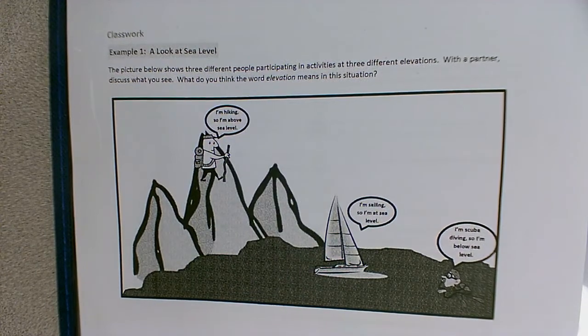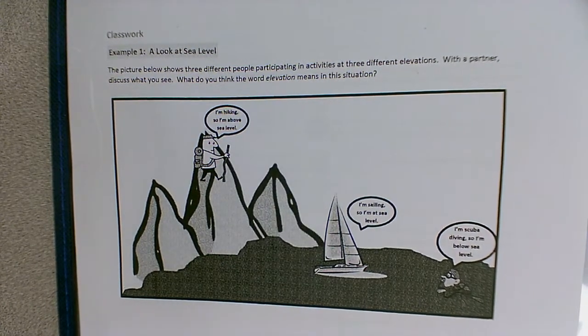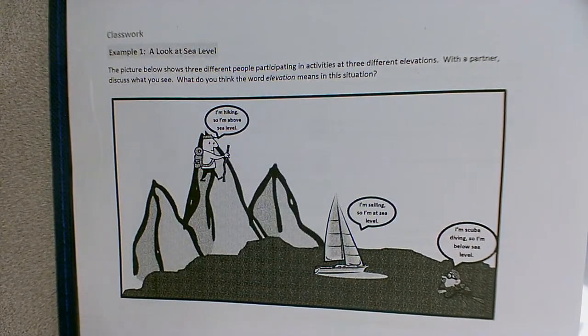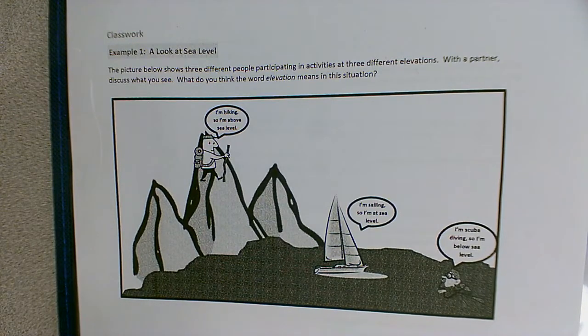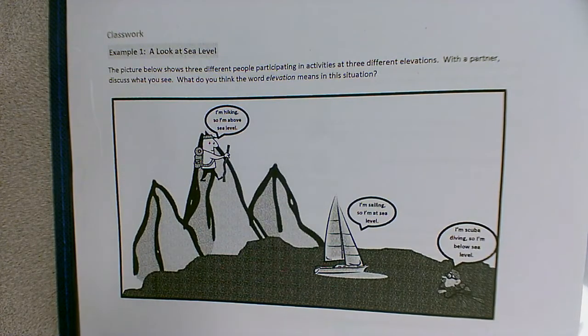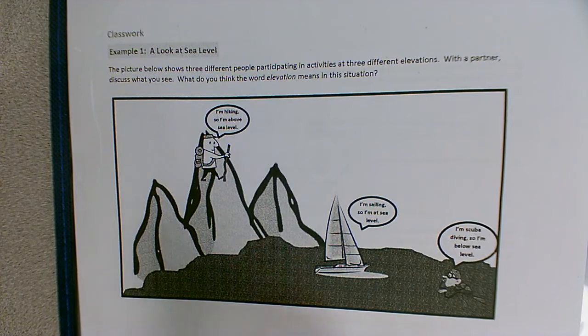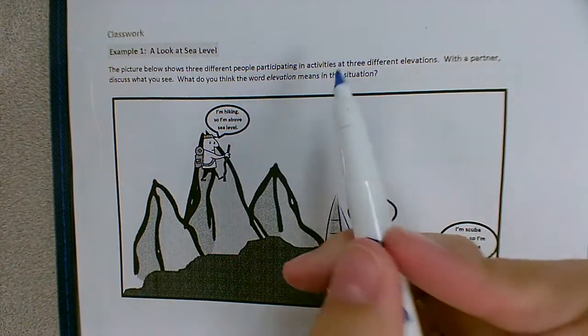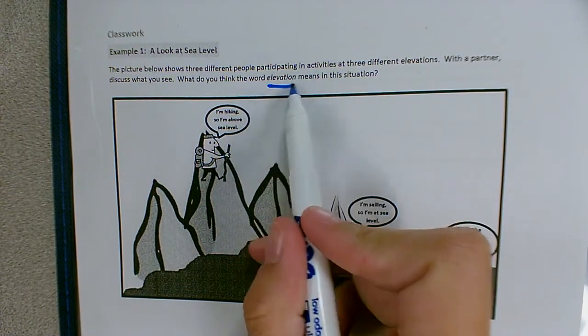So we're looking at the first page. Example one says look at sea level. The picture below shows three different people participating in activities at three different elevations. And we have to think about what does elevation mean in this situation.